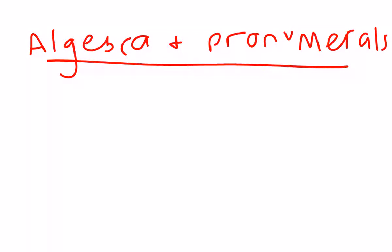Algebra is the branch of mathematics that uses letters in place of numbers. We call these letters pronumerals. When we use a letter instead of a number, it might be because that number is going to change, that is, it's a variable.